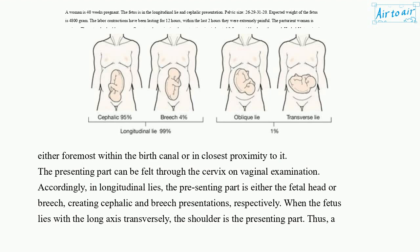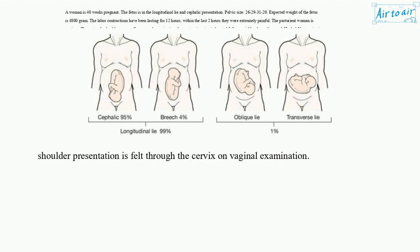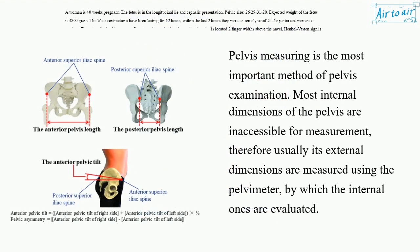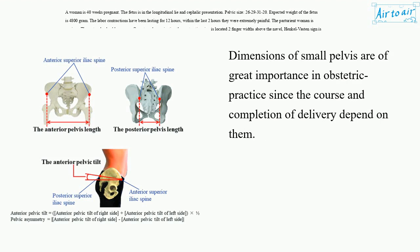When the fetus lies with the long axis transversely, the shoulder is the presenting part, and a shoulder presentation is felt through the cervix on vaginal examination. Pelvis measuring is the most important method of pelvis examination. Most internal dimensions of the pelvis are inaccessible for measurement; therefore, usually its external dimensions are measured using the pelvimeter, by which the internal ones are evaluated. Dimensions of the small pelvis are of great importance in obstetric practice, since the course and completion of delivery depend on them.